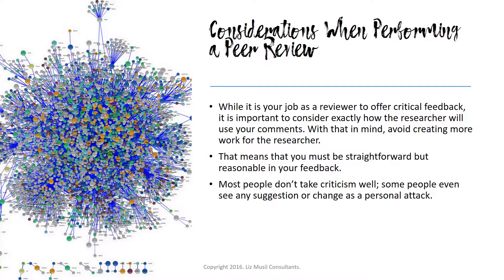When you encounter areas of the paper or research project that you do not understand, the author must address this. But rather than suggesting that the author has made an error, you can request that he or she clarifies a point. Most people don't take criticism well; some people even see any suggestion or change as a personal attack. One way to counter this reaction is to couch your suggestions in more personal terms to soften the blow. You can try opening your comments with phrases such as, 'To me it seems that,' or 'I had trouble understanding.' The journal Nature offers a good list of guidelines that a reviewer should have in mind to generate useful comments. As you review a paper, you want to consider who will be interested in reading the paper and why — this is a matter of understanding the audience for the paper and for whatever institution or publication you review the work for.